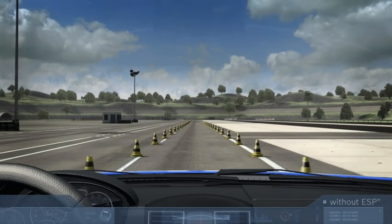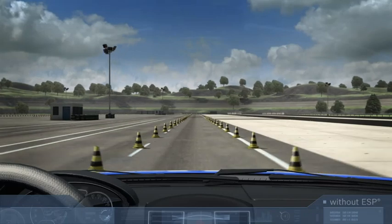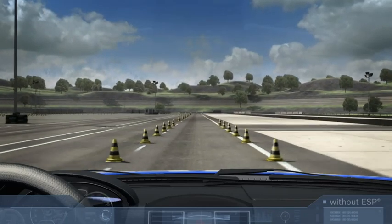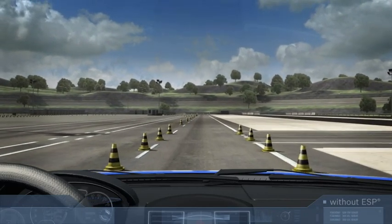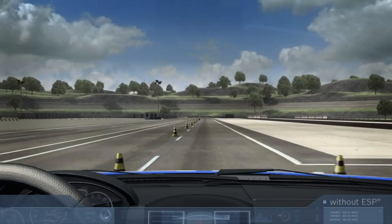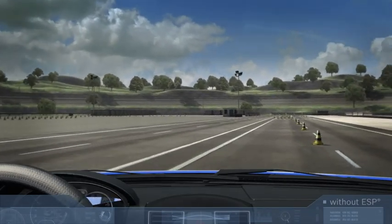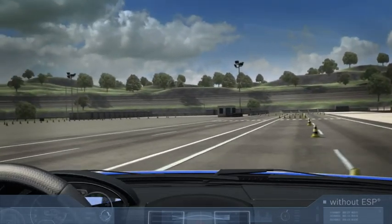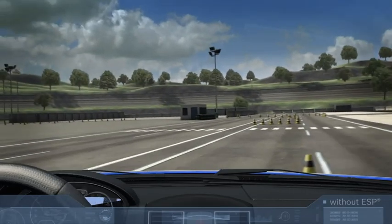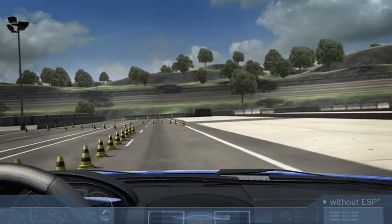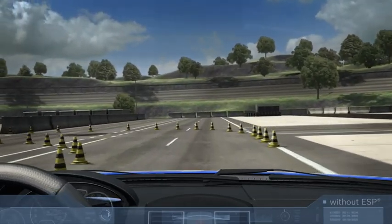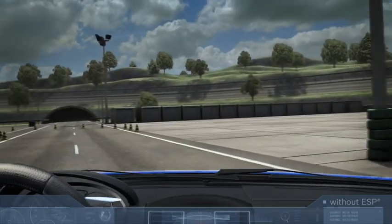Various forces act upon a vehicle in motion. While longitudinal forces operate during braking and acceleration, lateral forces develop when cornering or swerving. The tires, which are the only point of contact between the vehicle and the road surface, have to transfer these forces to the road.